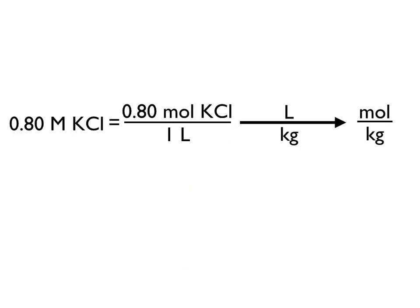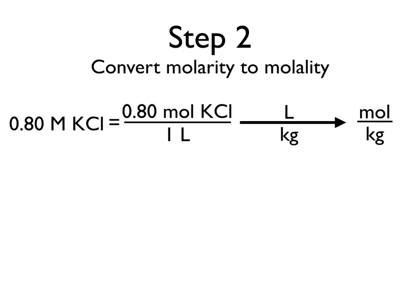Our next step is going to be to convert the molarity to molality. We're going to focus on this liters per kilogram here, which looks kind of like density but flipped. The density of water at this temperature is 1.0 grams per milliliter, but here we have to focus on putting that into kilograms per liter.